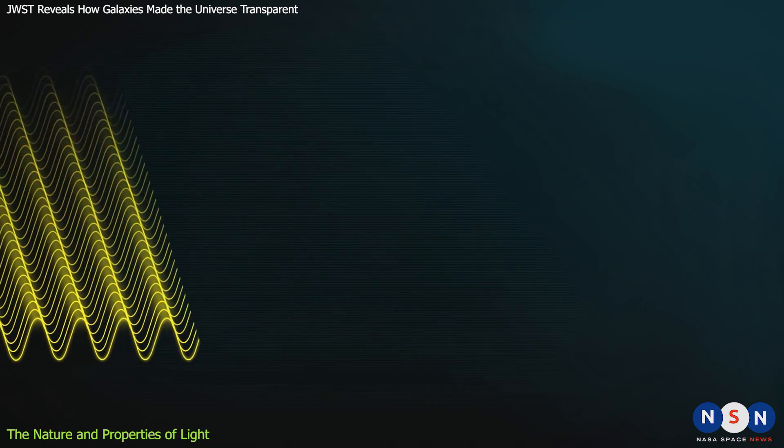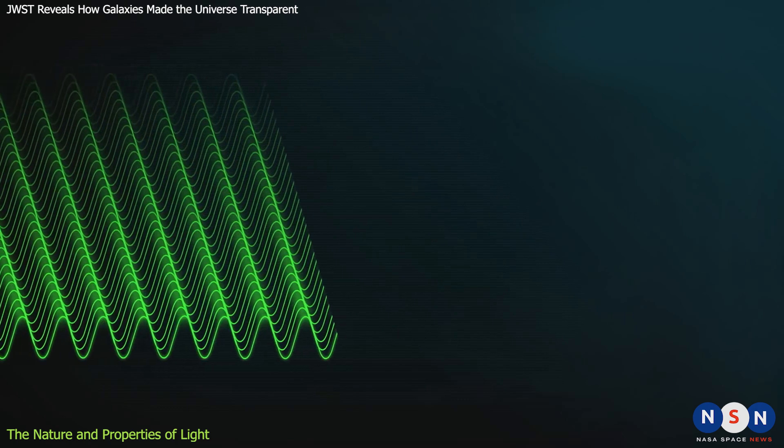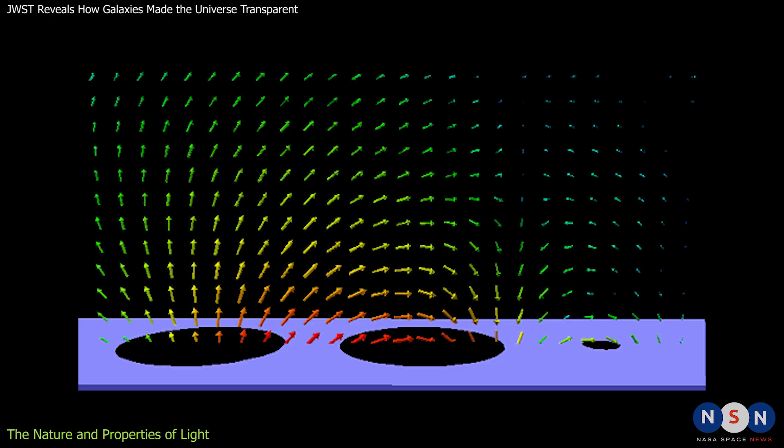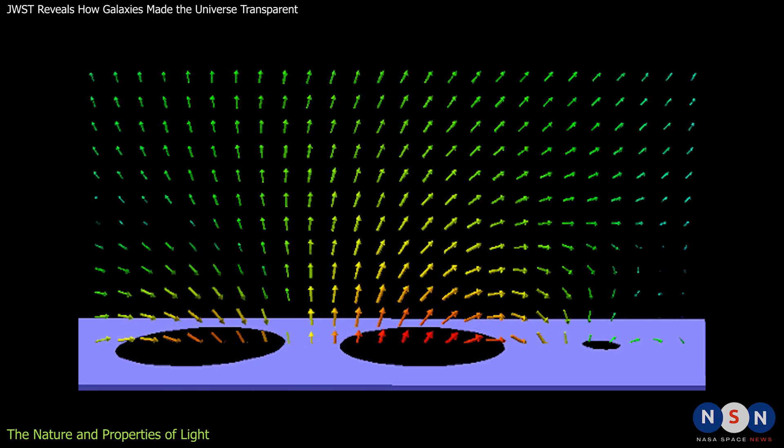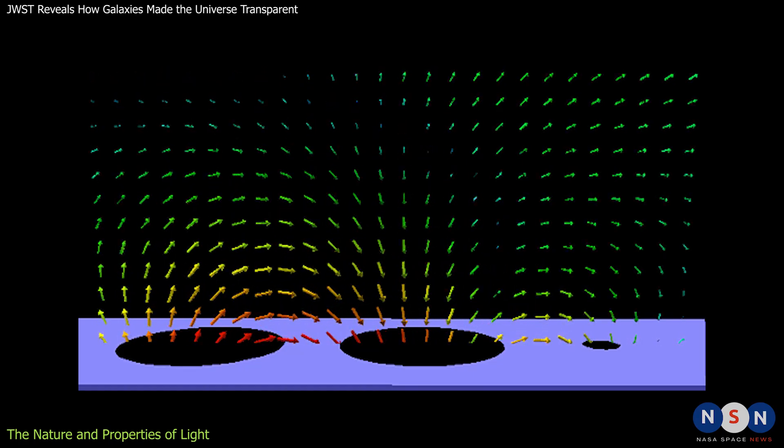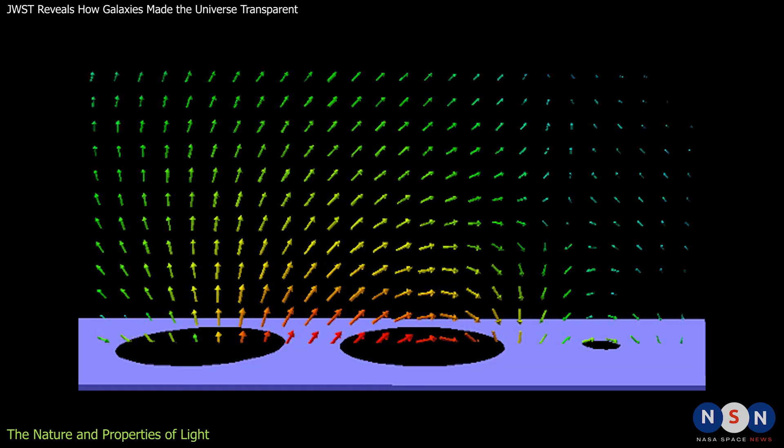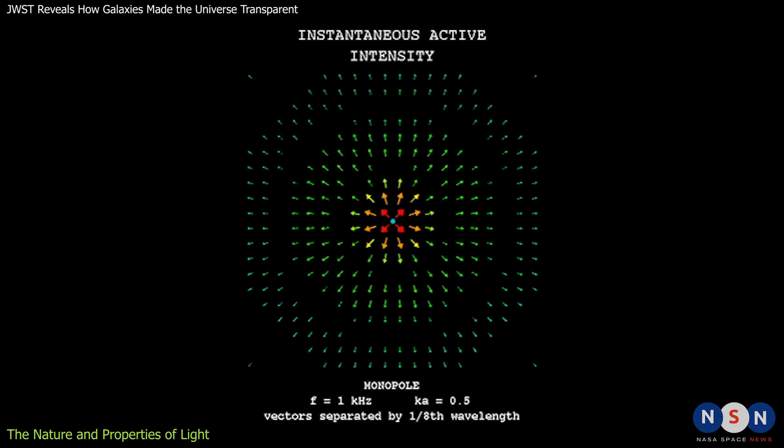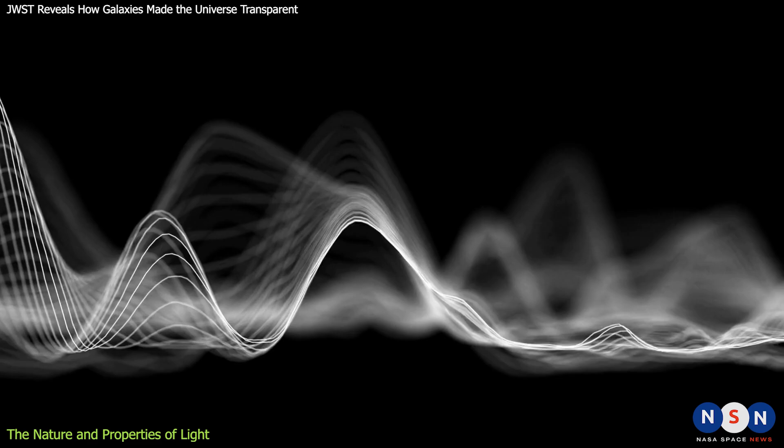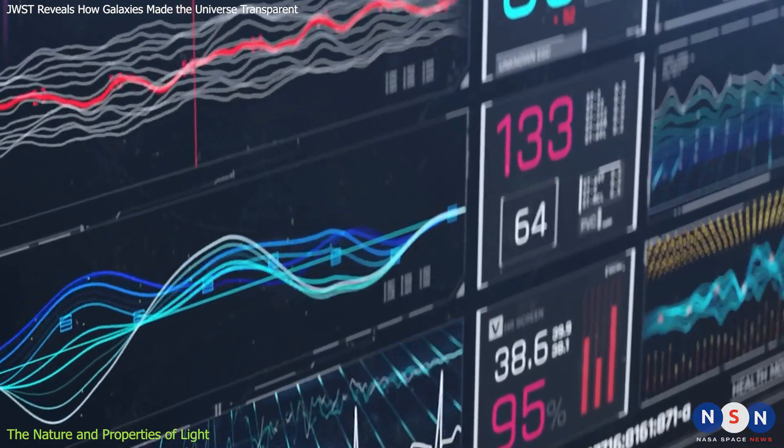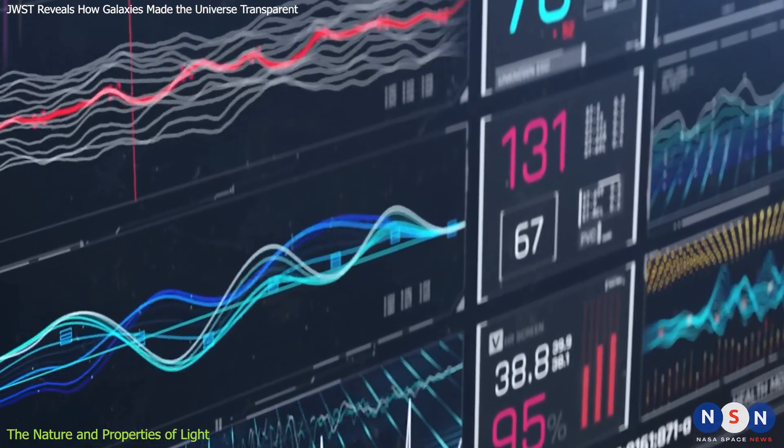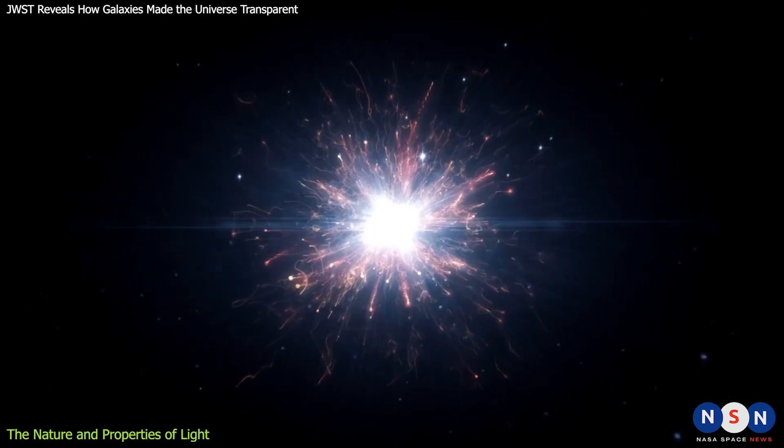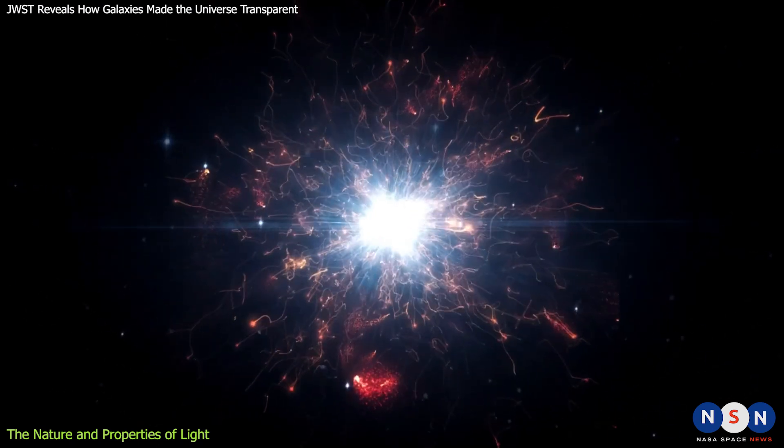This means that light with a shorter wavelength has a higher frequency than light with a longer wavelength. Frequency also determines the energy of light, since higher frequency means higher energy. A third concept that we need to know is intensity, which is the amount of energy that a wave carries per unit area per unit time. Intensity depends on both frequency and amplitude, which is the height of a wave. Higher frequency and higher amplitude mean higher intensity. Intensity affects how bright or dim a source of light appears to us.